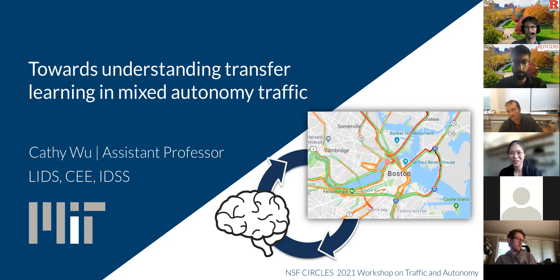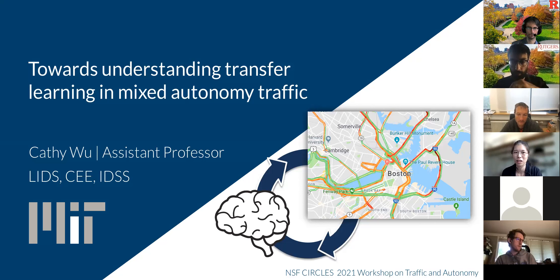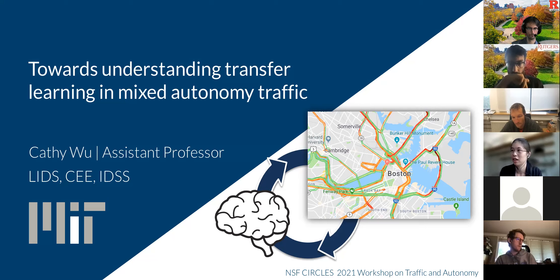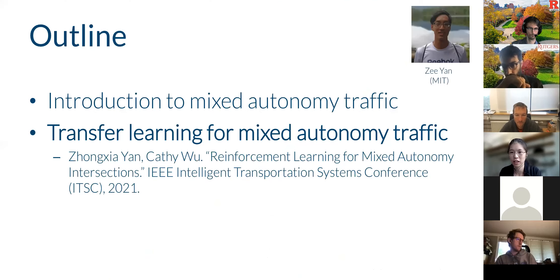Today's talk will reiterate some of what has already been known by this audience, but I'll focus on one topic I've been very interested in recent years: the idea of to what extent transfer learning can be effective in helping us with learning for mixed autonomy traffic settings. We definitely don't solve this question — it's a really big and interesting one, and it may also have implications for the field of reinforcement learning. I'll introduce mixed autonomy traffic and put it into context of why we want to consider transfer learning, and then spend most of the talk on a recent ITSC paper.